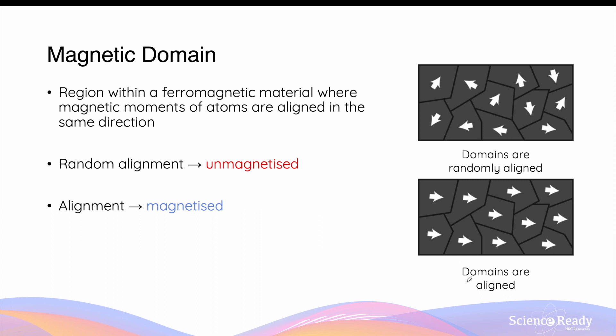If we can align the direction of these domains in the same direction, parallel to one another, this is how we make the ferromagnetic material become magnetized.